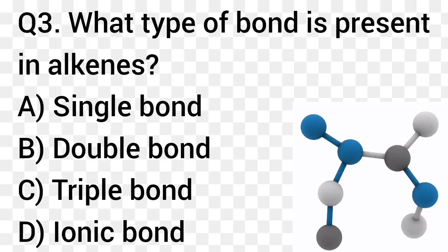Question number 3. What type of bond is present in alkanes? Option A: Single bond. Option B: Double bond. Option C: Triple bond. Option D: Ionic bond. The right answer is option B, double bond.